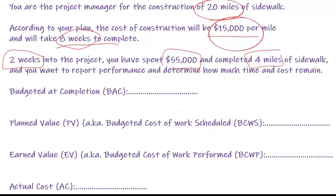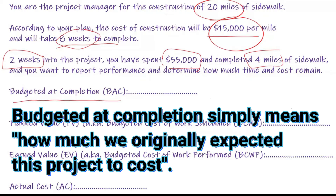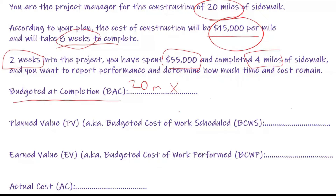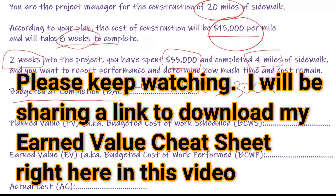The first thing we need to do is figure out how much this project should have cost, and that's called the budgeted at completion (BAC). The budgeted at completion is how much this project is budgeted for by the time it's completed — the total budget. So since this was 20 miles times $15,000 per mile, that gives you $300,000 as a total budget.